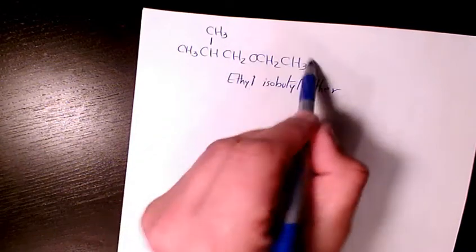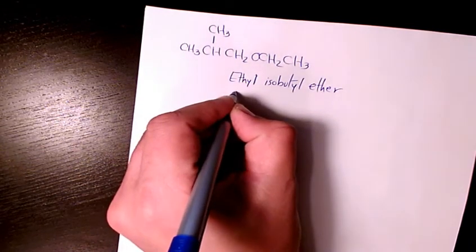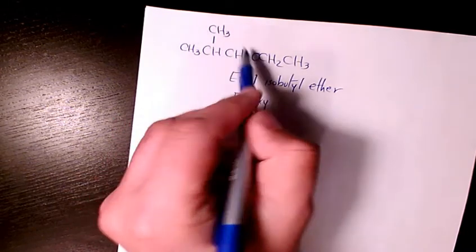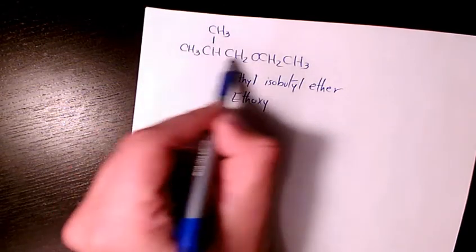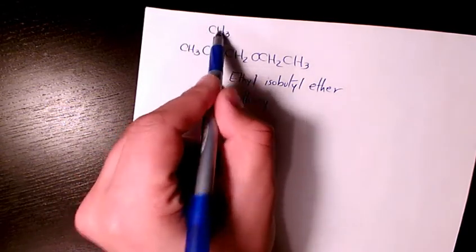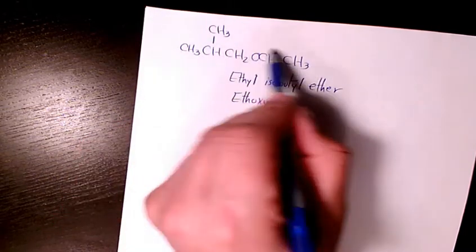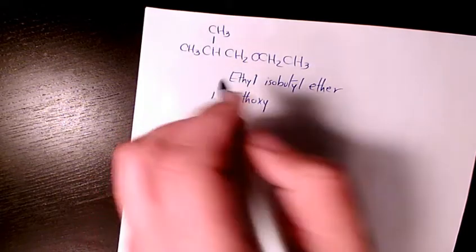This is going to be alkoxy group because that's smaller. That's going to be ethoxy. And here it connects to this one: one, two, three propane. So it's going to be two methyl propane, because that's carbon two. And this ethoxy connects to the first one, so it's going to be one ethoxy two methyl propane.